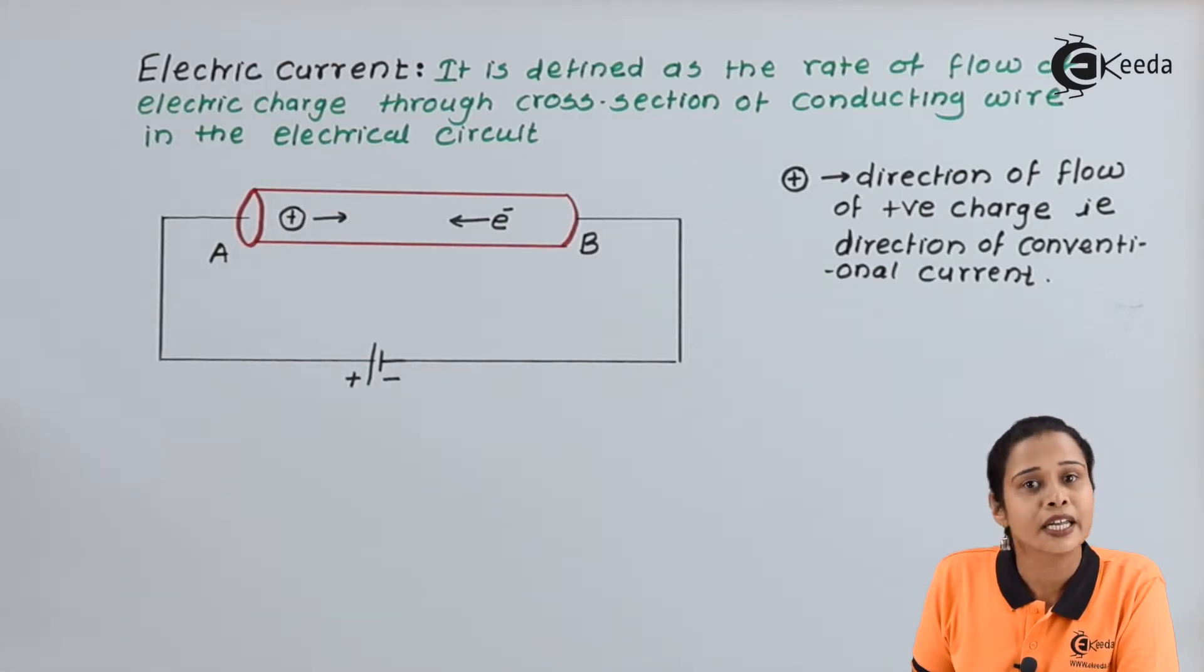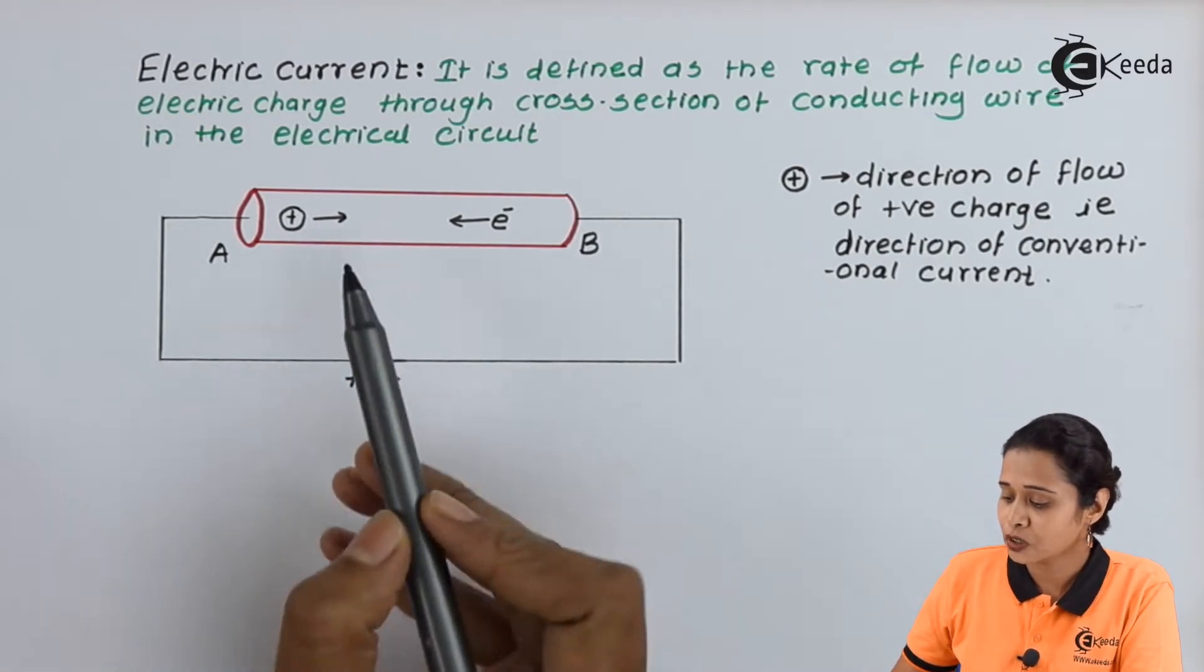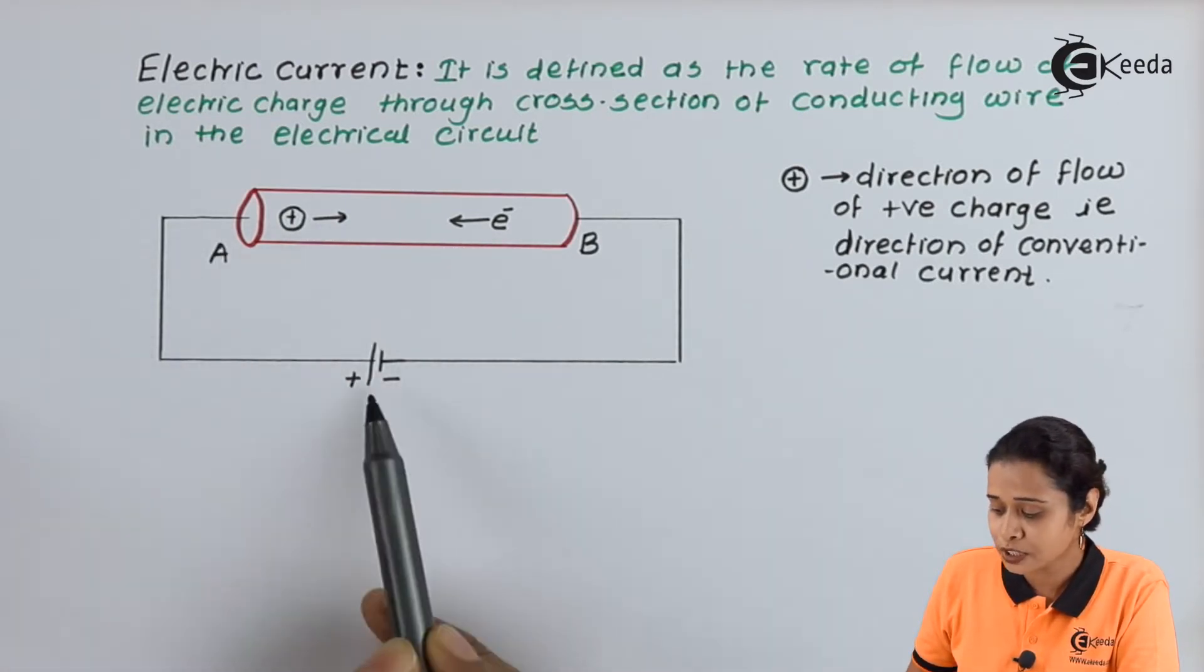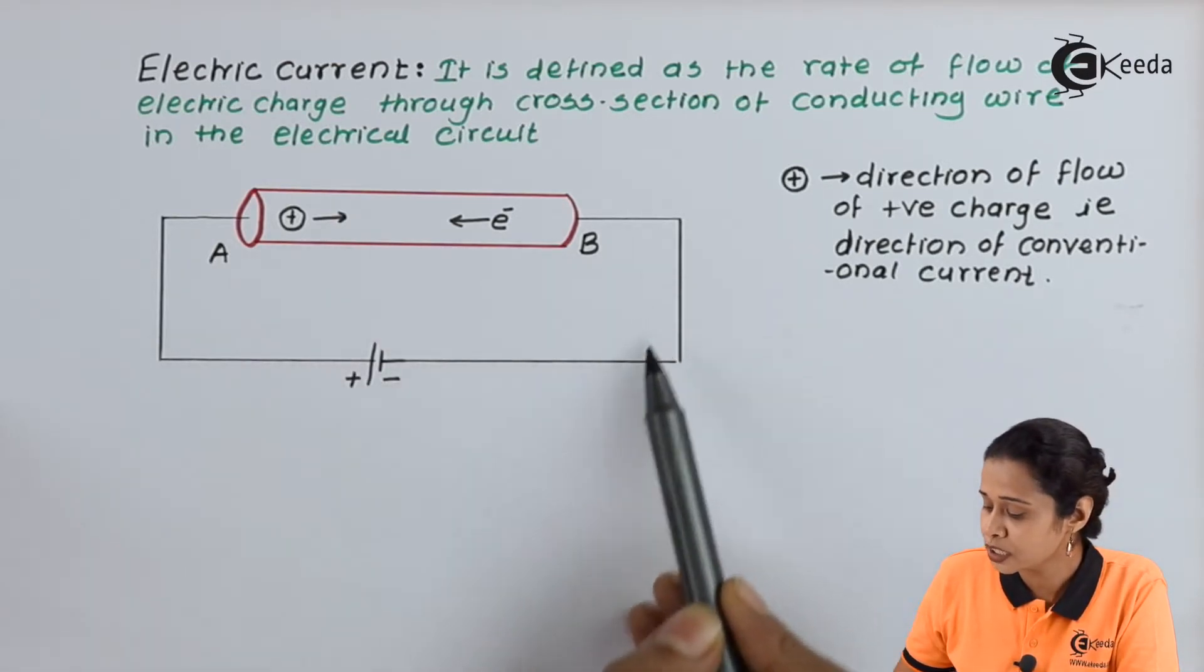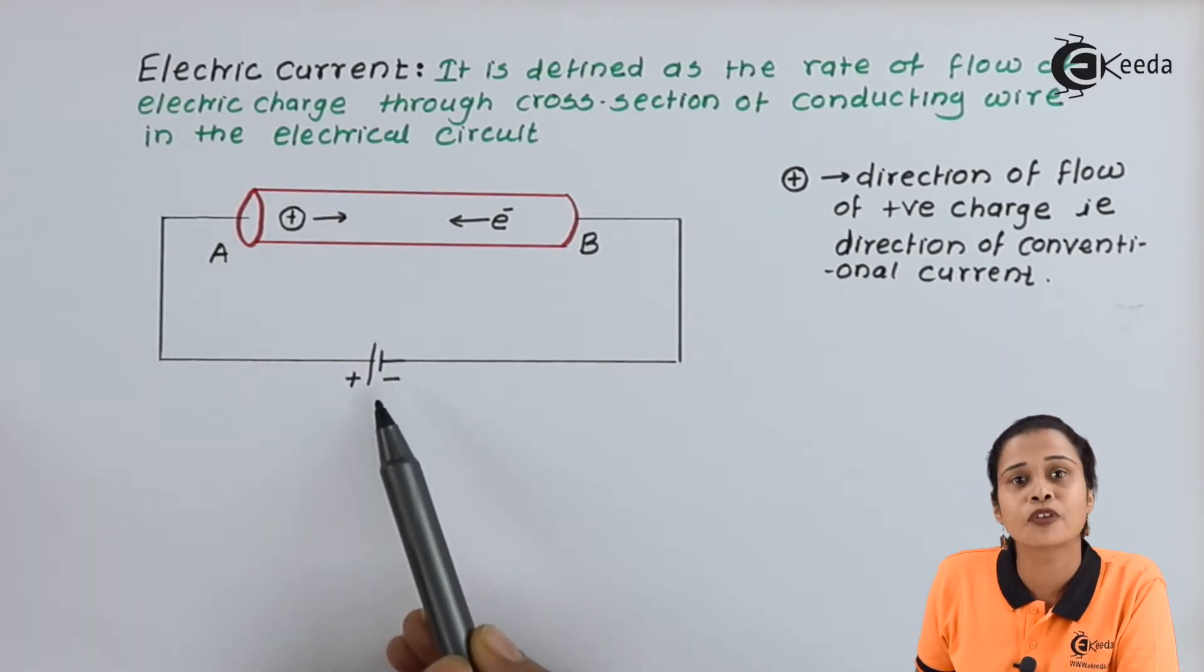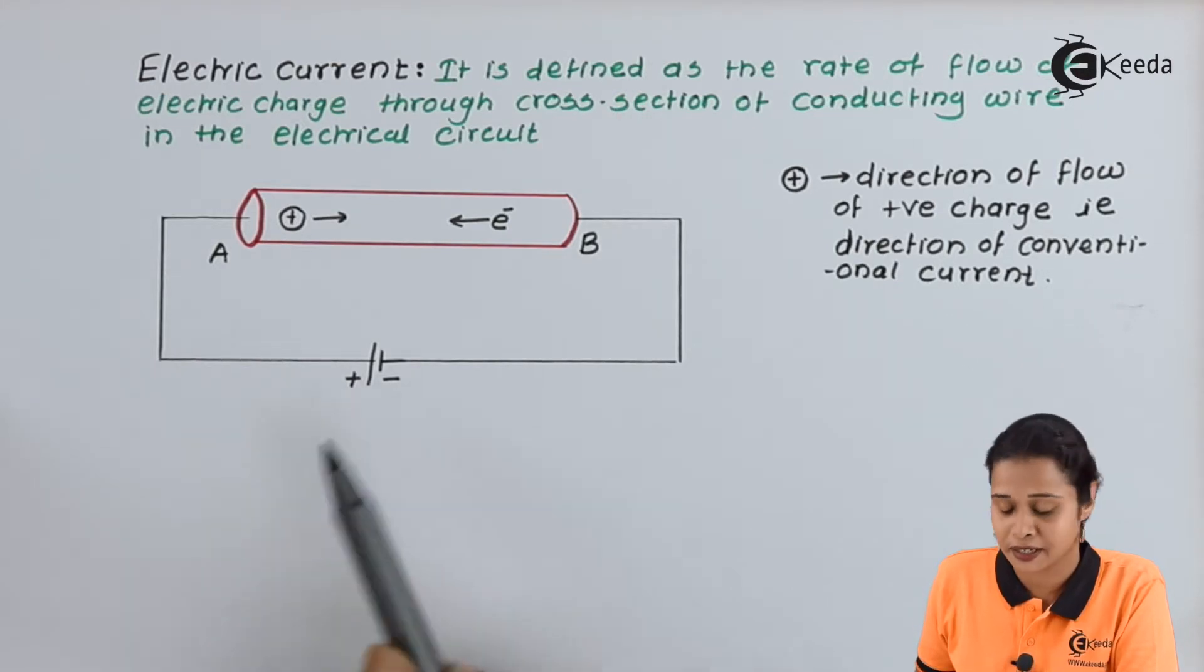But the direction of current, that is conventional direction of current, is always considered as direction of positive charge. Means, electrons are moving towards positive charge, but the positive charges are moving towards the negative charge. So, this is the direction of conventional current in the circuit.